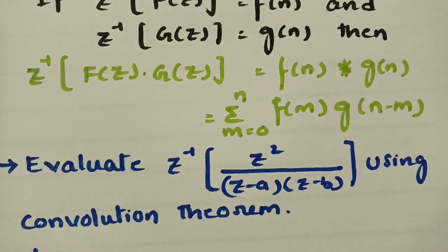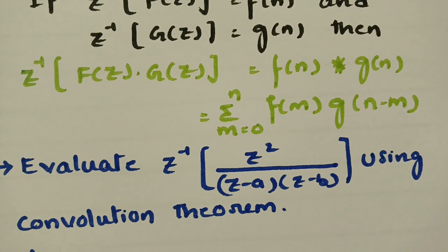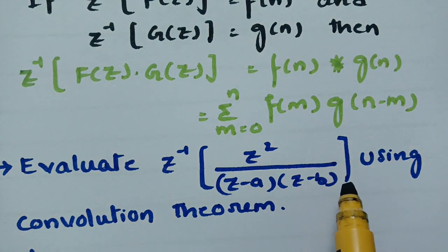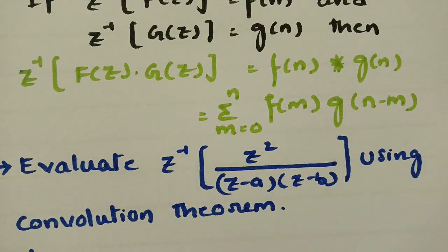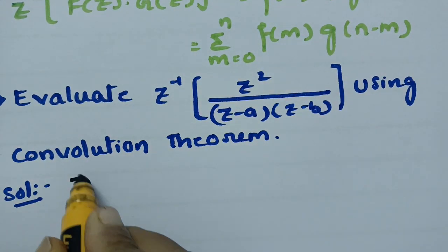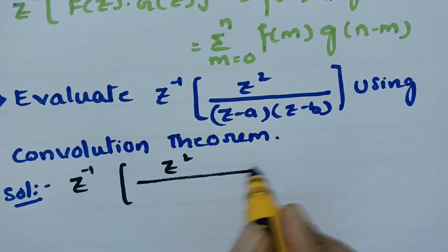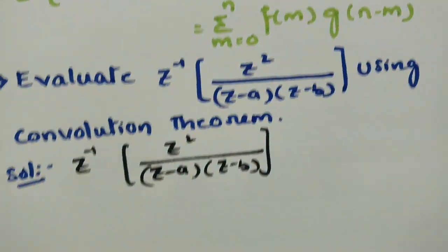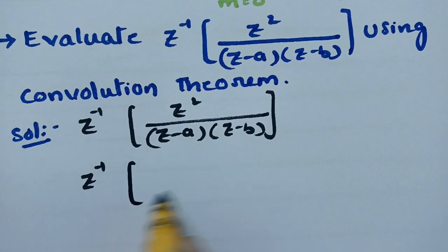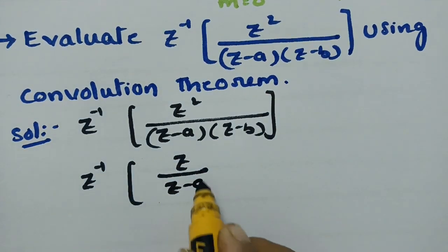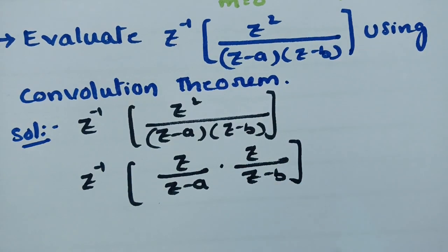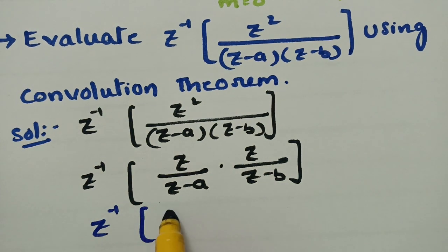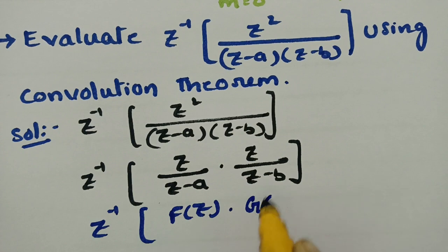Using this convolution theorem, we are going to evaluate the most important problem: Z inverse of Z squared by (Z minus A) into (Z minus B), using the convolution theorem. We need two functions, F of Z and G of Z. We split this as Z inverse of Z by (Z minus A) into Z by (Z minus B), which are clearly Z inverse of F of Z into G of Z.